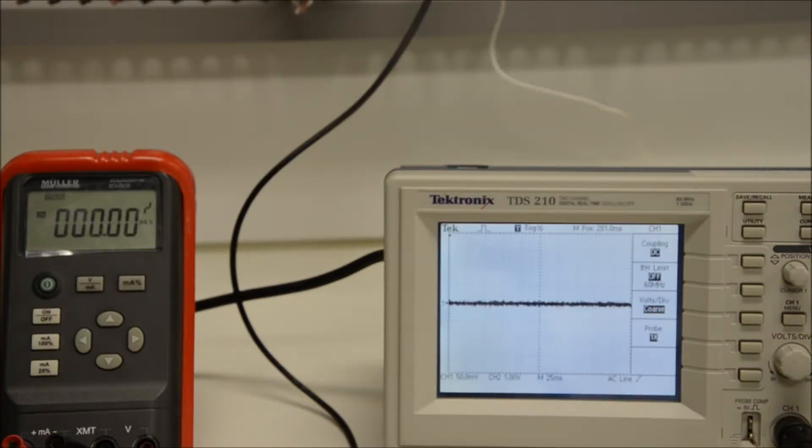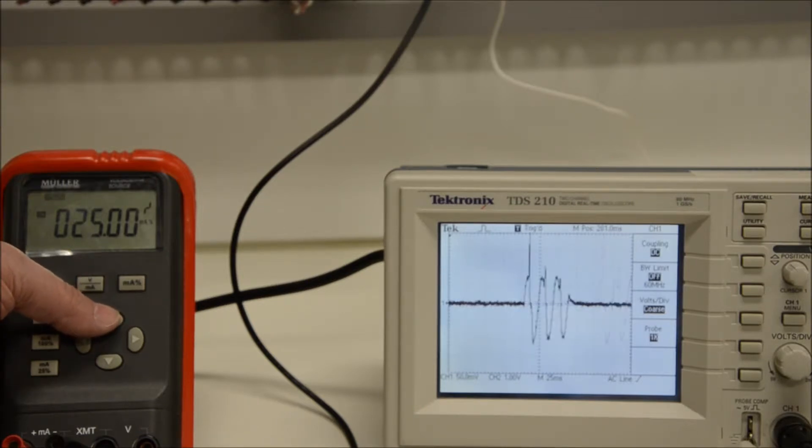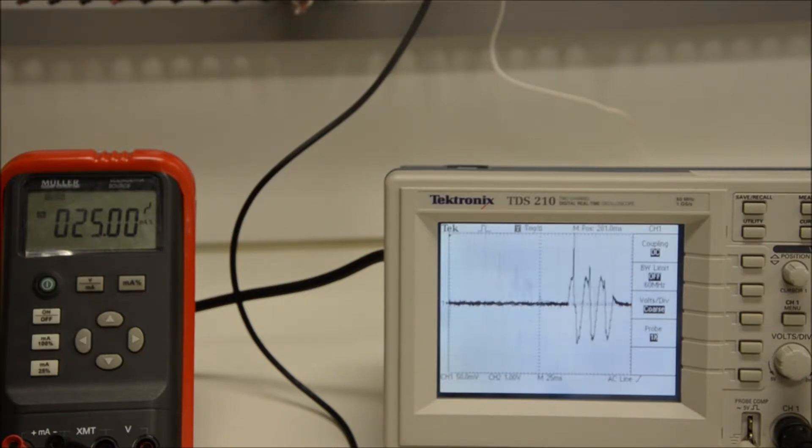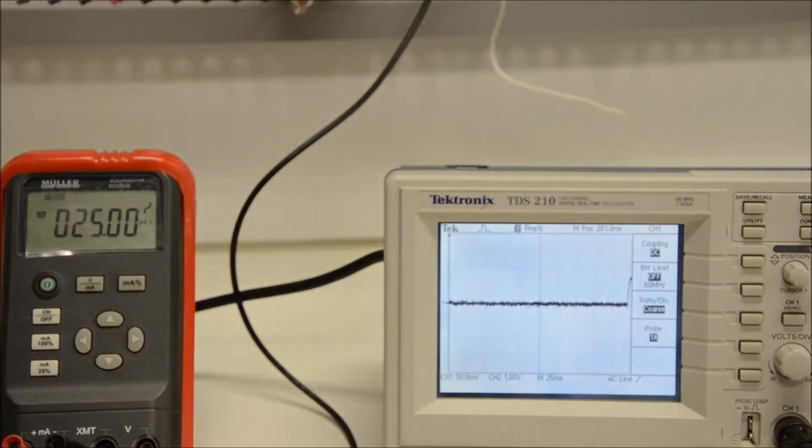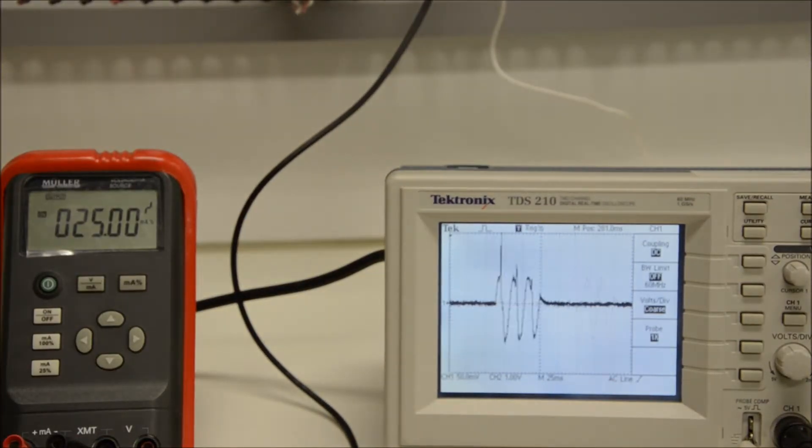Okay, we've now switched over to burst control mode. We've got zero control input so we can see nothing on the scope. Now we'll turn it on with 25% input. You can see that we're on for four cycles and then...